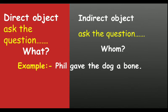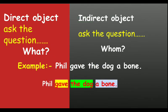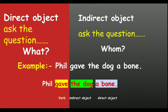The example is: 'Phil gave the dog a bone.' To identify the direct object, we ask 'Phil gave what?' — Phil gave a bone. So 'a bone' is the direct object. To find the indirect object, we ask 'Phil gave whom?' — Phil gave the bone to the dog. So 'the dog' is the indirect object. In the sentence, 'gave' is the verb, 'the dog' is the indirect object, and 'a bone' is the direct object.